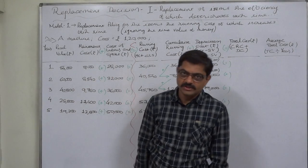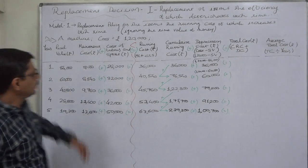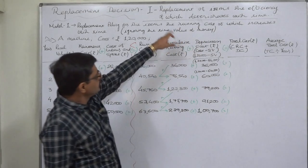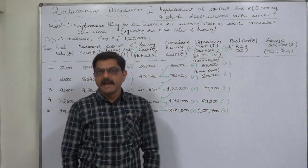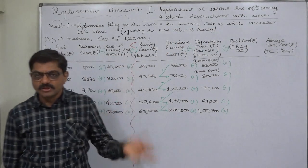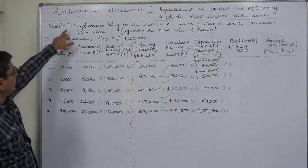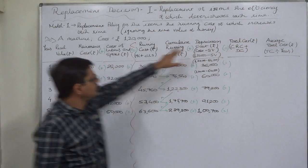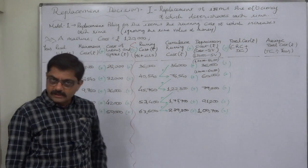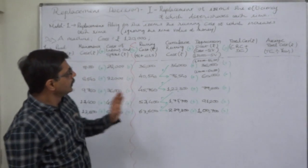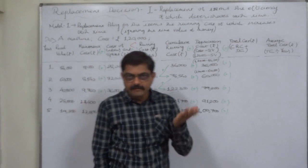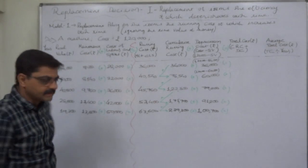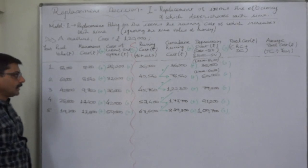Hello and welcome. Operations Research, the chapter: Replacement Decisions - replacement of items the efficiency of which deteriorates with time. These are high-cost items like a machine or plant. The model is replacement policy for items whose running cost increases with time, and we are ignoring the time value of money at this stage.